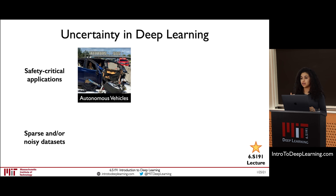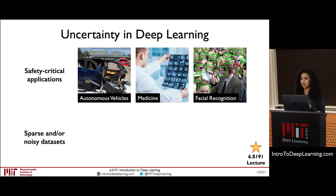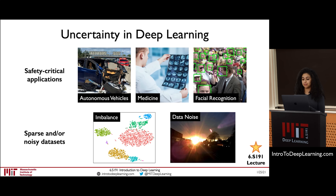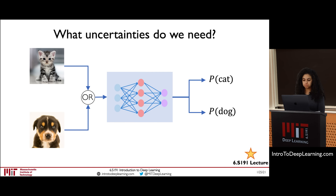This notion of uncertainty is very important for deploying deep learning systems in safety-critical applications: things like autonomous driving, medicine, and facial recognition. As these algorithms interface more and more with human life, we need principled ways to ensure their robustness. Uncertainty metrics are also very useful in cases where we rely on datasets that may be imbalanced or have a lot of noise present in them.